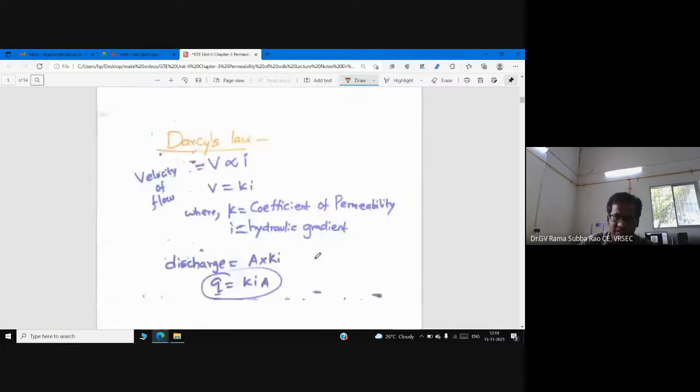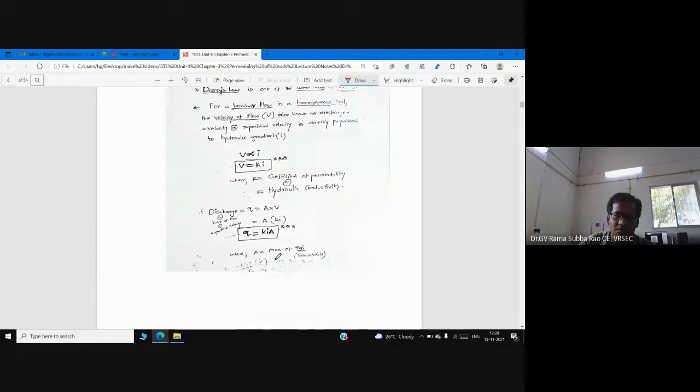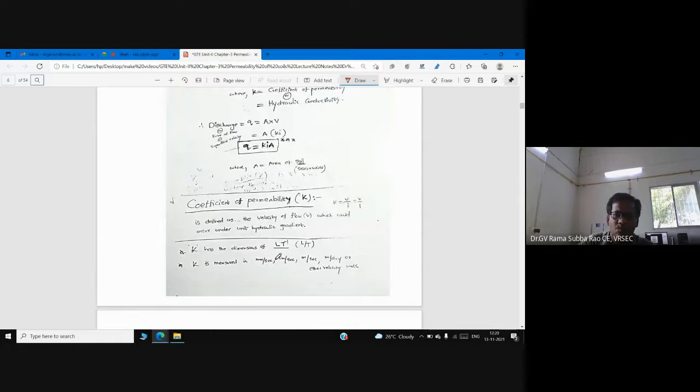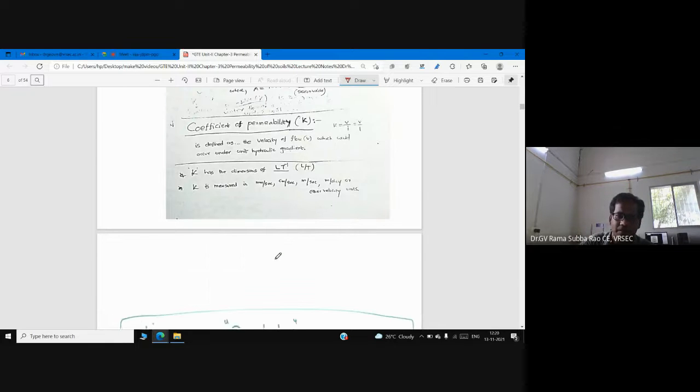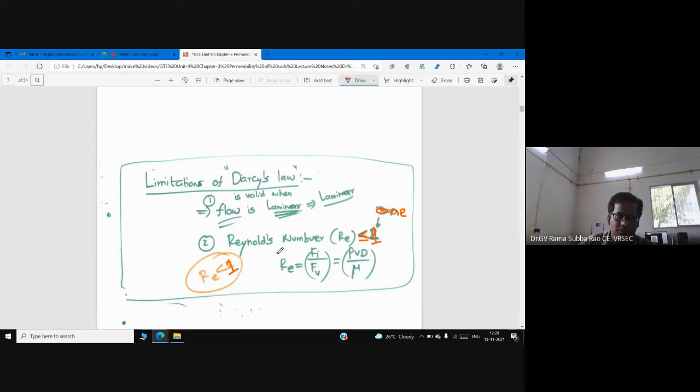So again I'm telling Darcy's law: v directly proportional to i, v equals Ki. What is K? Coefficient of permeability. Now it is the right time to discuss what are the major limitations of Darcy's law, because people repeatedly ask this question.